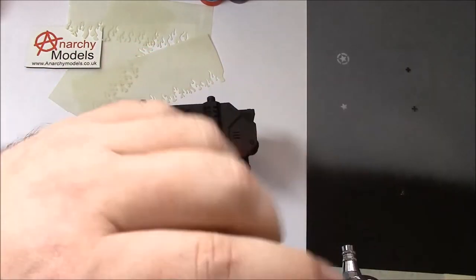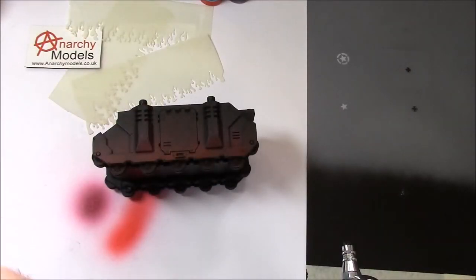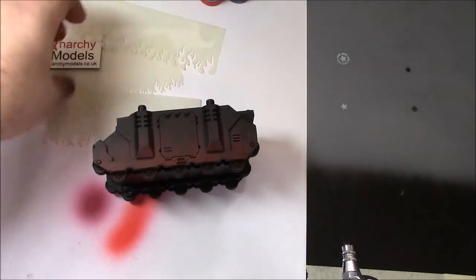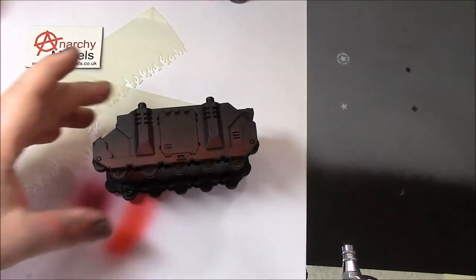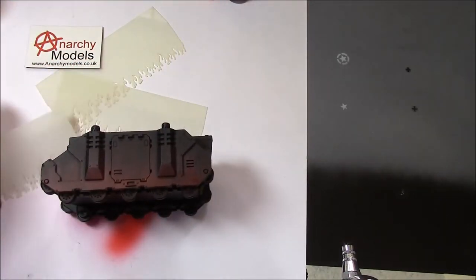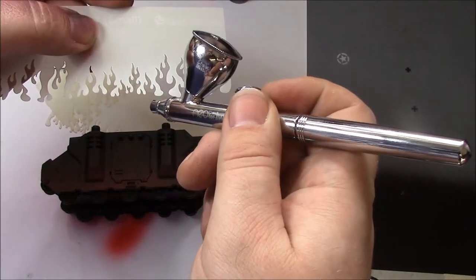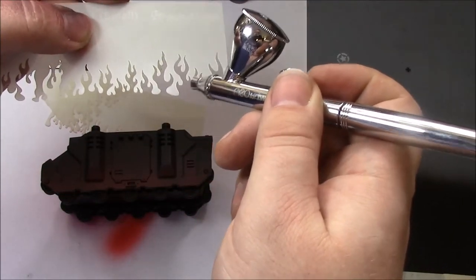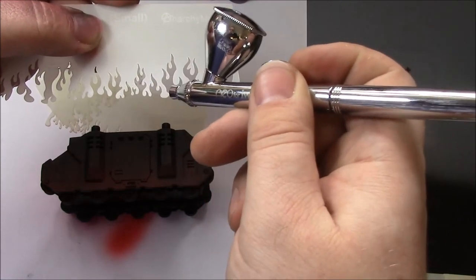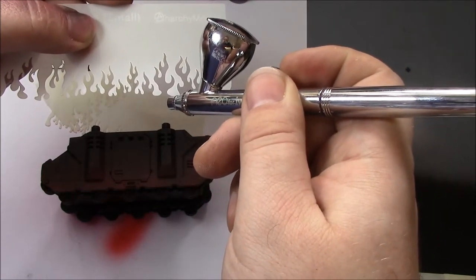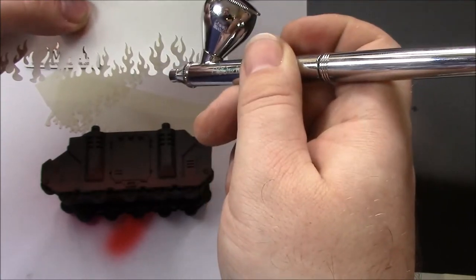So we go back to our white now and use the stencils again. This time we're going to concentrate the paint around the edges of some of these loop shapes at the bottom here. You don't want to have a very strong coating right to the tip of the flames. We want the brightest part to be at the bottom here.